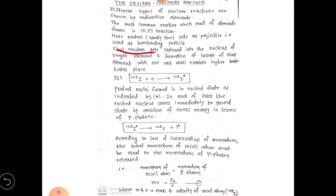For capturing of neutron inside the target element, we require a slow neutron. As the bombardment takes place, the isotope having one unit mass higher than the parent element forms. For example, here we have taken example of iodine-127, which is the stable, non-radioactive isotope of iodine.